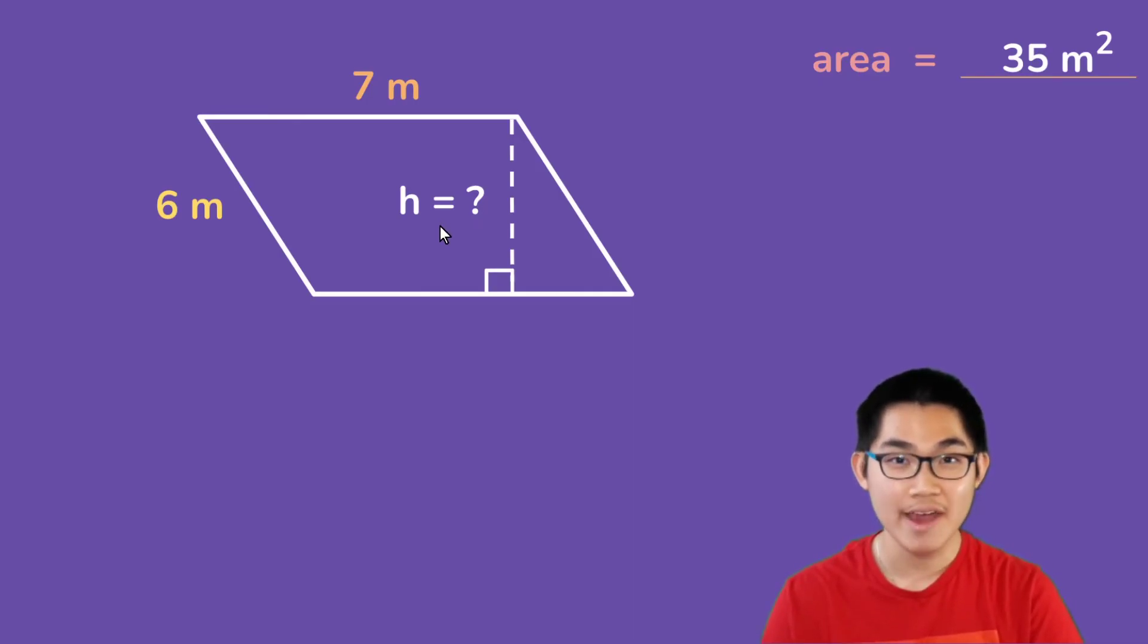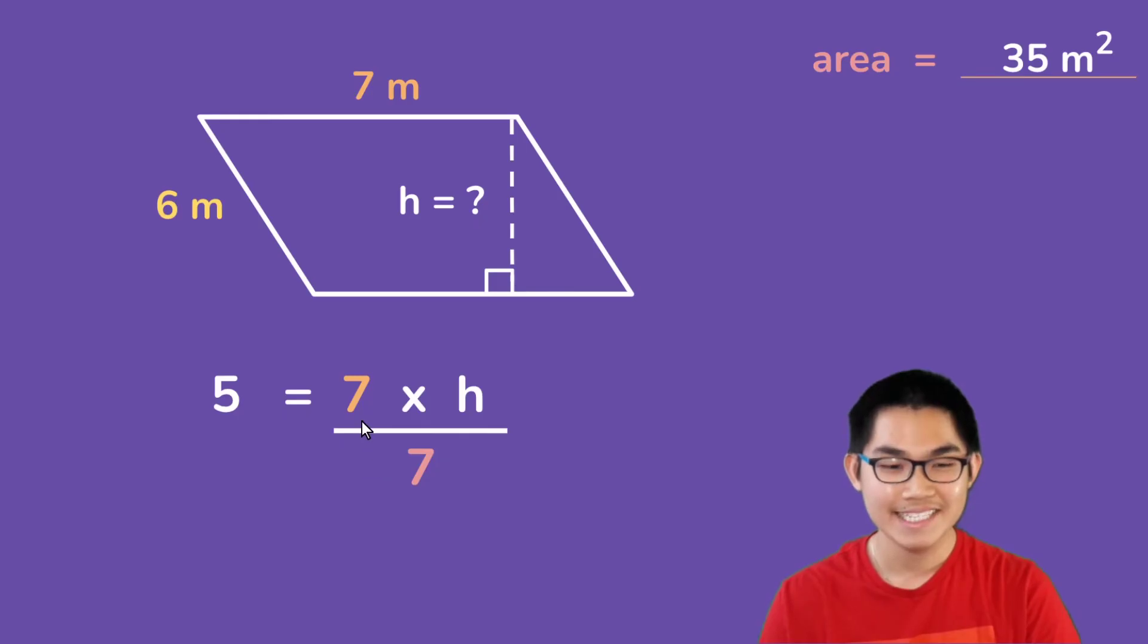Okay, so first of all we need to use the area formula. The area is the base times the height, and we know that the area is 35, the base is 7, and so we can easily find the height. Now what I'm going to do is divide both sides by 7, and on the left side 35 divided by 7 gives you 5, and on the right side 7 times h divided by 7 is just the height because the 7s cancel out. And so we know that the height is 5 meters.